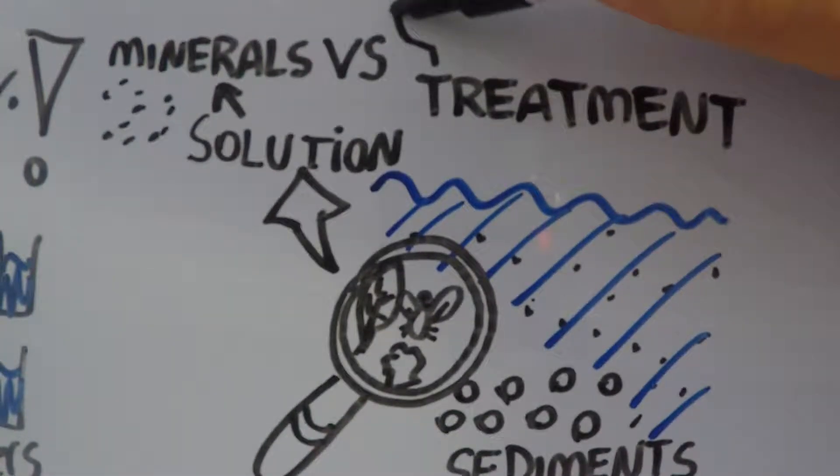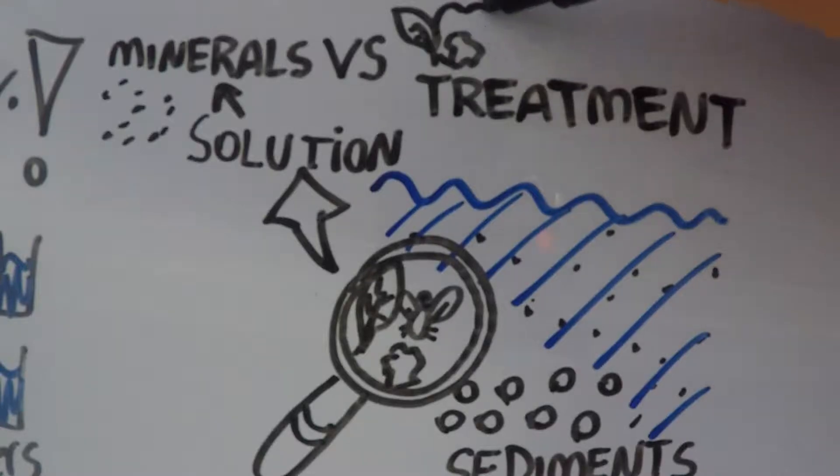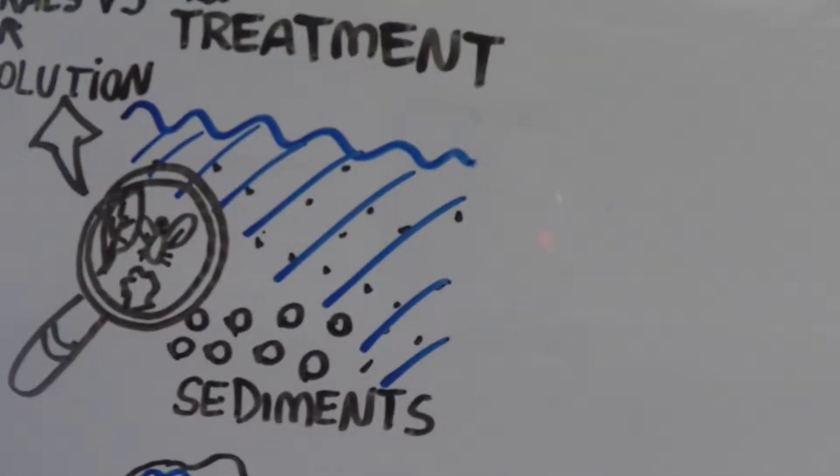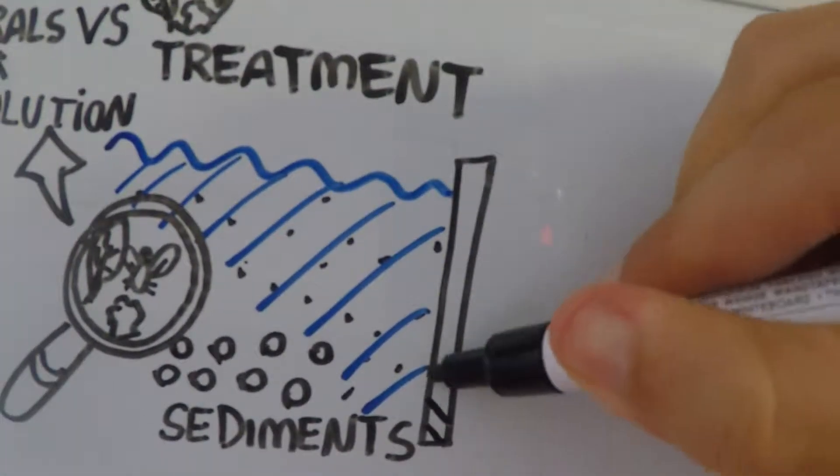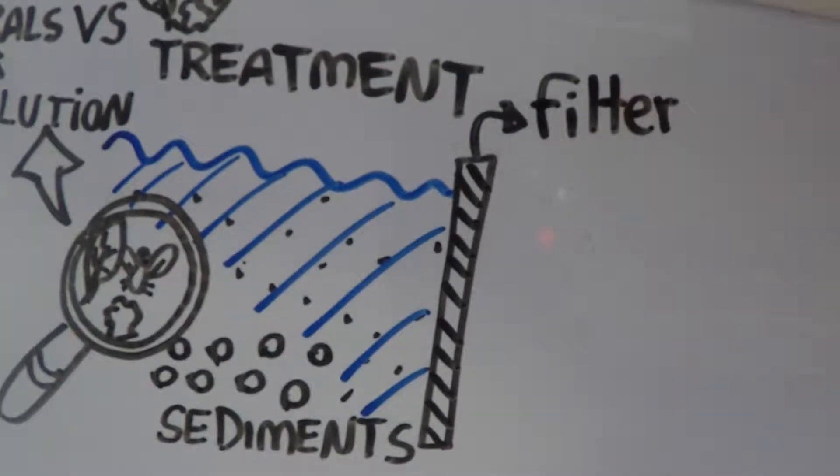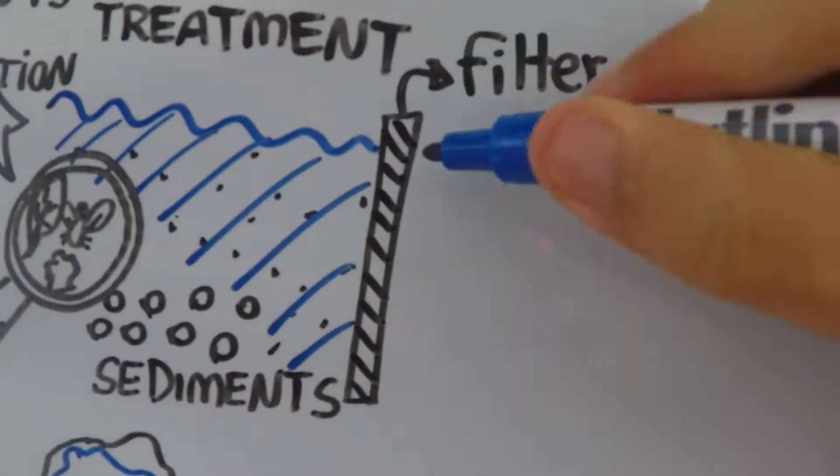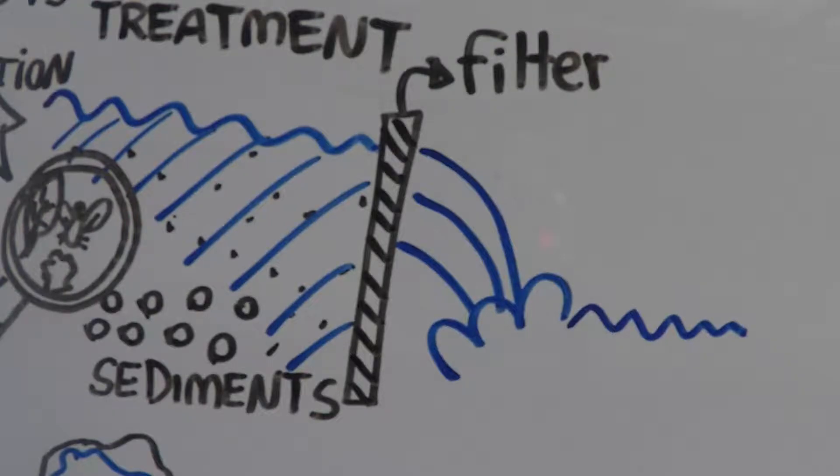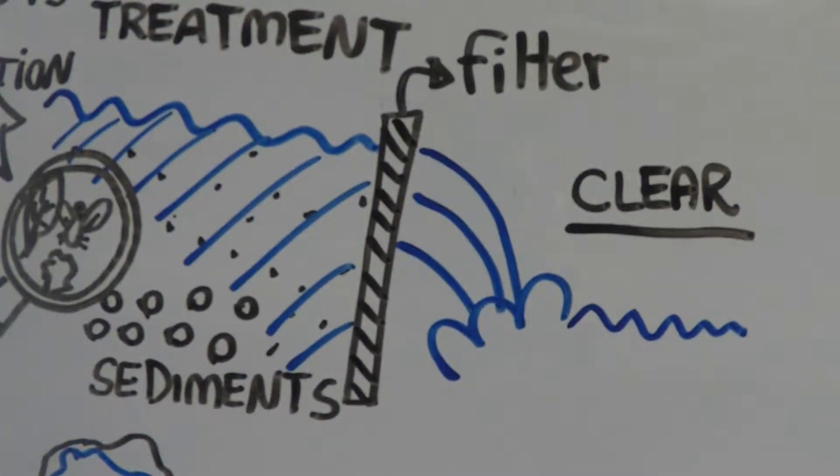Because of all the particles dispersed in natural water, we call it a solution. Some of these particles, like some minerals, are actually good for us and therefore there is no need to separate them. However, bigger particles like sediments must be separated from the mixture before arriving at our houses.